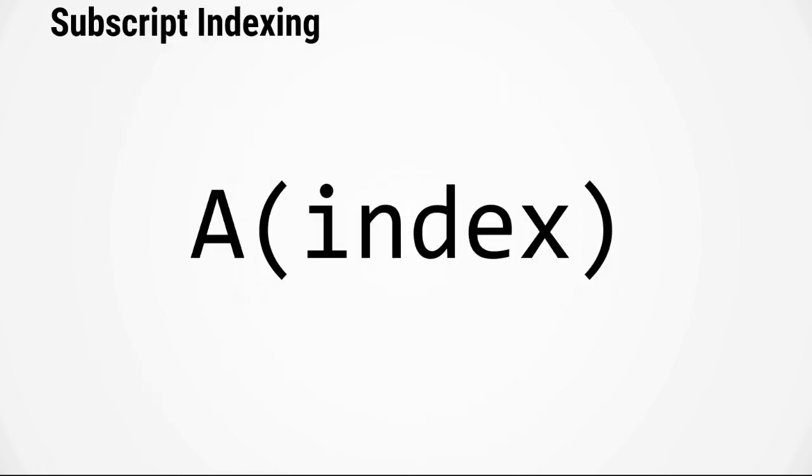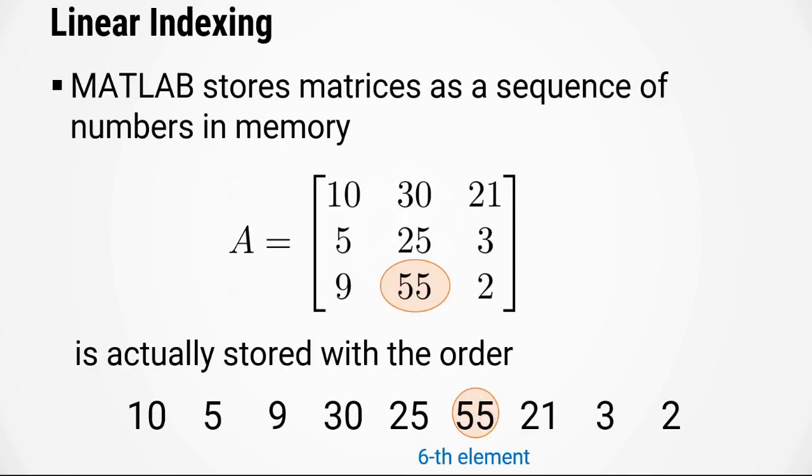The syntax for linear indexing is very similar to subscript indexing, but we use the position of the element in memory instead of the row and column. So for our example, the value of the index would be 6. So since we want to index the 6th element, the command would be A, open parenthesis, 6, close parenthesis.